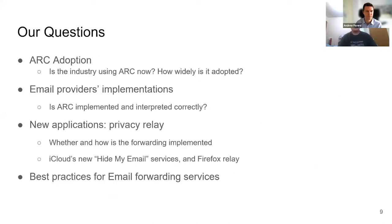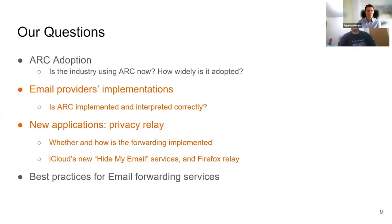With ARC in mind, here are the questions we are interested in. How many services and senders in general have adopted ARC? How did those who adopted ARC implement it and interpret the information it provides? Moreover, we looked into new privacy-preserving relay services to see if these forwarding services are in any way different from traditional use cases and if there are new security issues. In the end, we proposed configurations for email providing services that balance security and delivery rate.